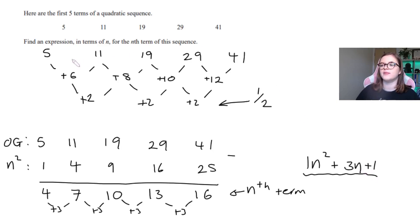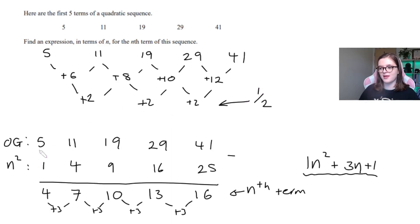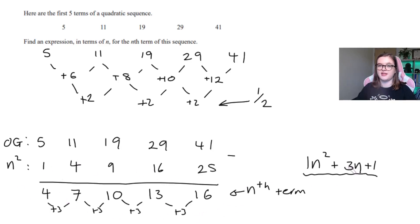To recap the method: find the first differences, then the second differences, and halve the second difference to get the n² coefficient. Write out the original sequence, subtract the n² sequence, then work out the regular nth term of the resulting linear sequence. Stick them all together — that's how you find the quadratic nth term.